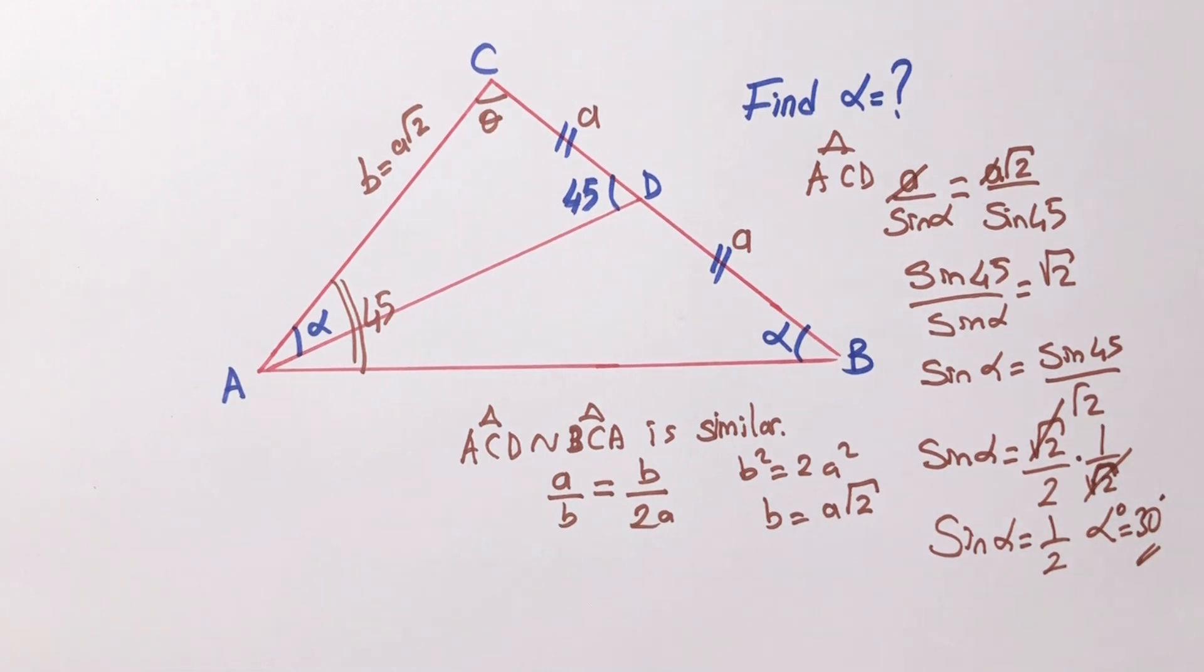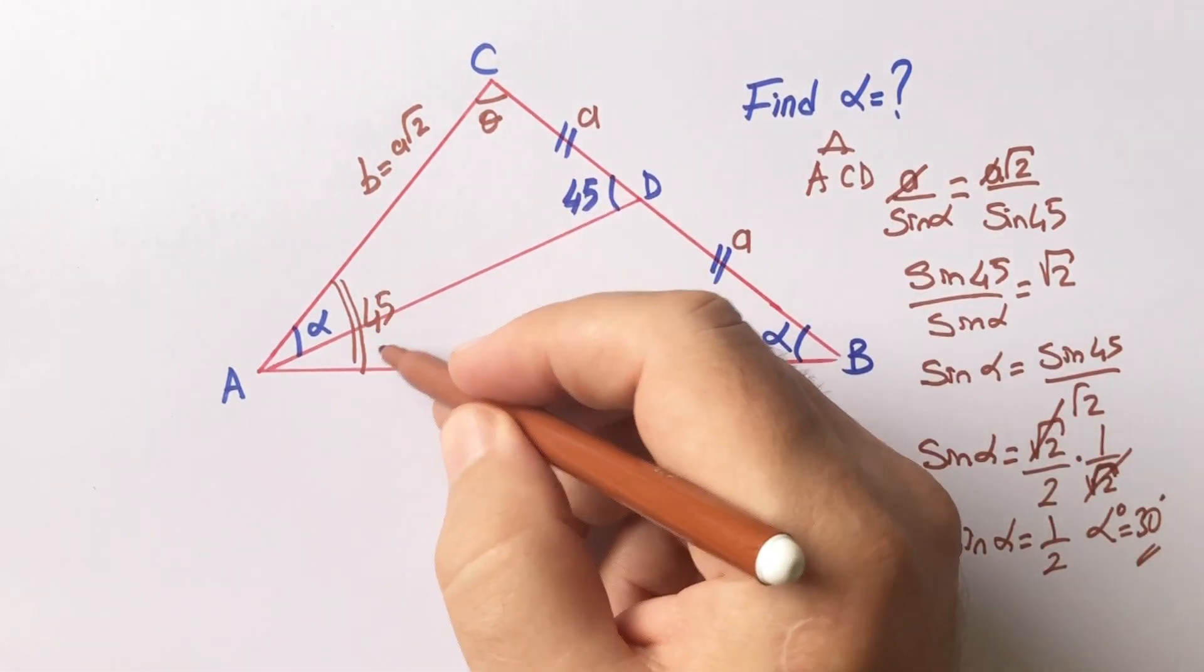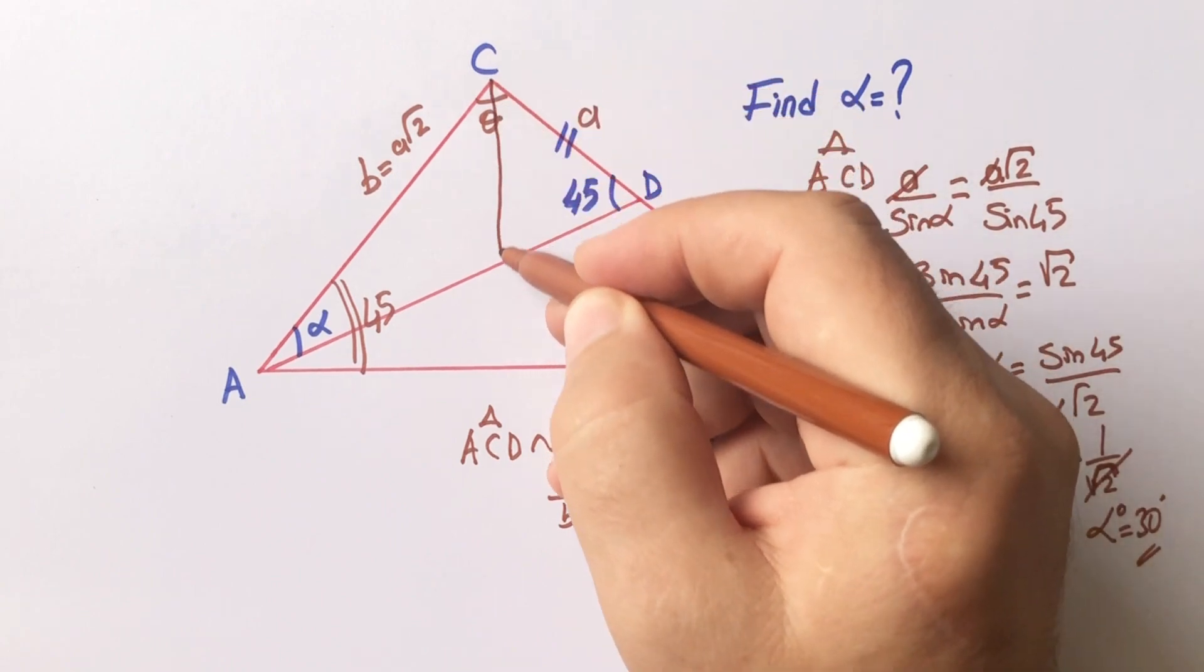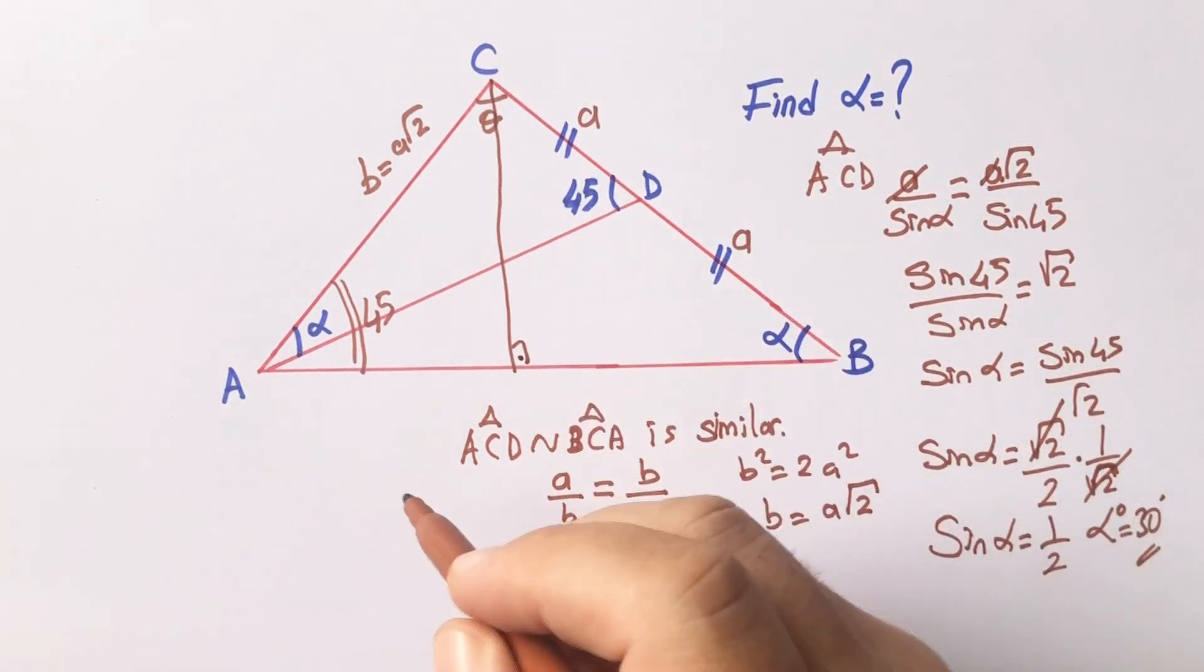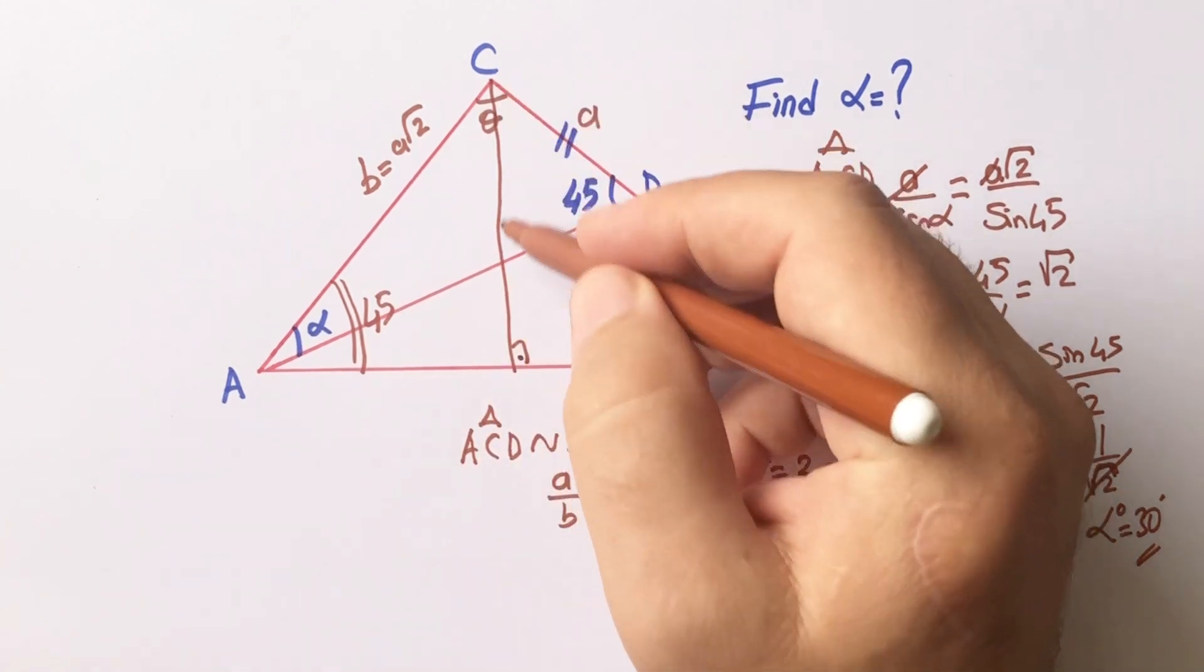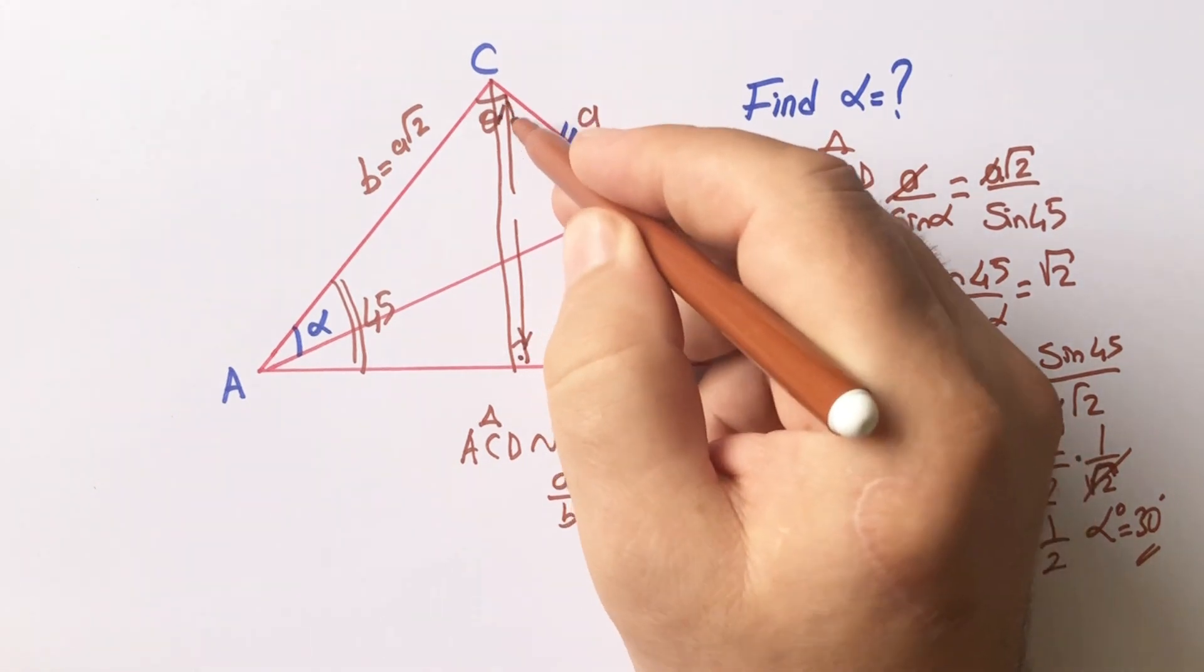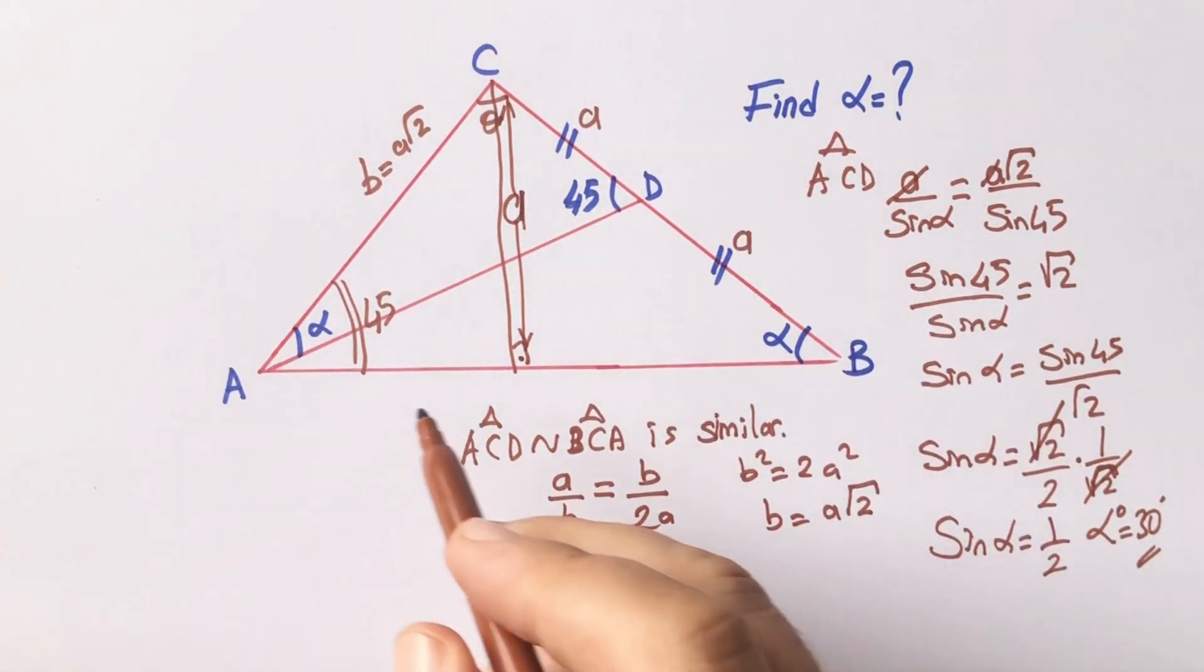Or you can calculate the alpha like this. Let's draw a perpendicular line across the 45 degrees. Hypotenuse is A root 2. That means these two lengths must be A unit. Here is A, and this length is A.